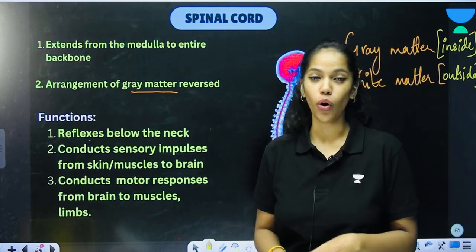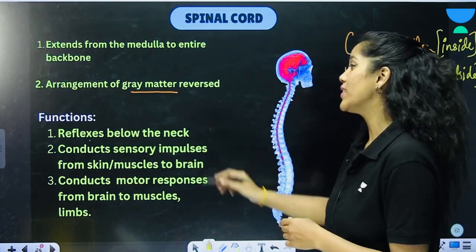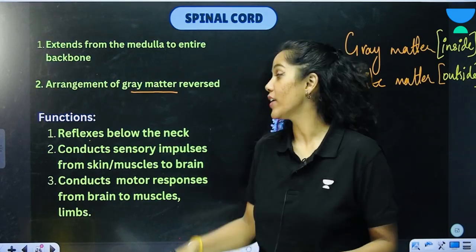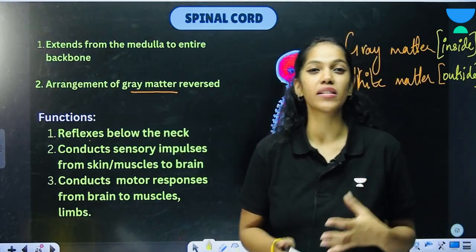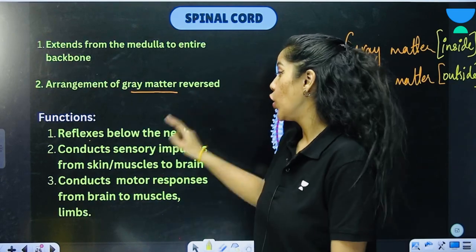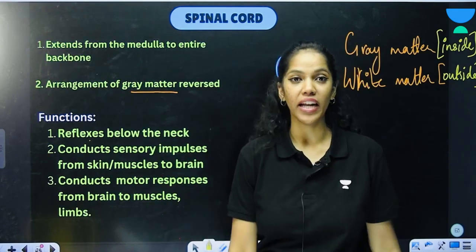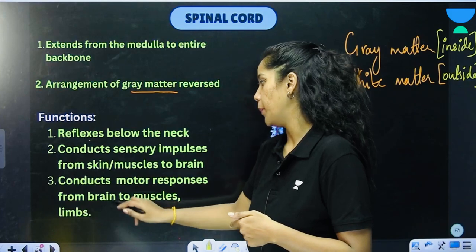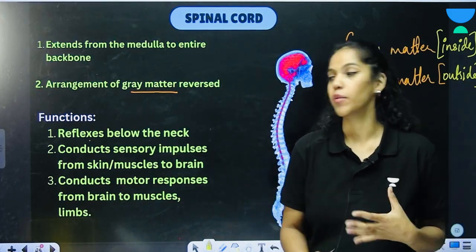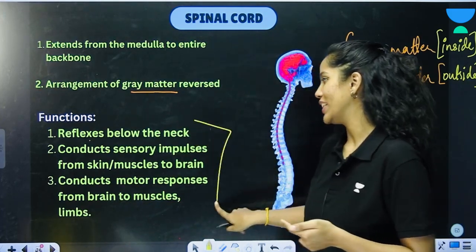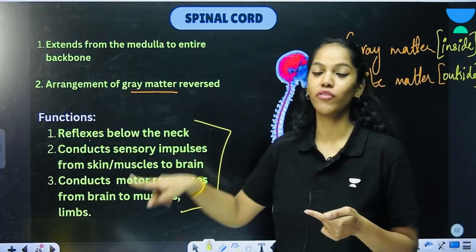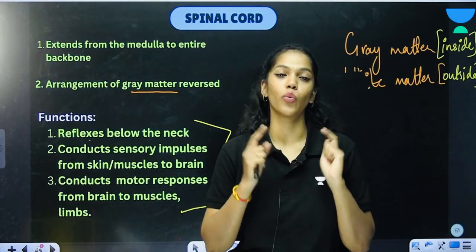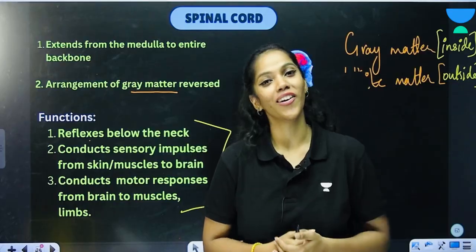Speaking of the functions of the spinal cord: it is responsible for all your reflexes below the neck; it conducts sensory impulses from the skin and muscles to the brain; and it conducts motor responses from the brain to the muscles and limbs. Remember these three main functions, and remember that in the spinal cord, grey matter is on the inside and white matter is on the outside.